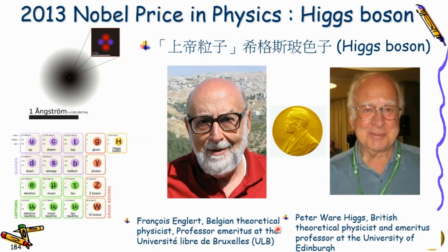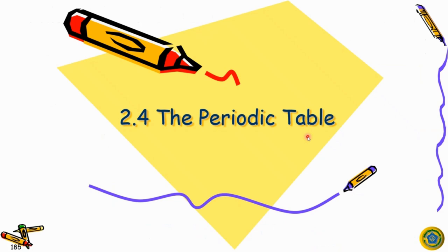I think we've finished the first topic on electrons. We don't discuss particles inside the nucleus — for example, the Higgs boson, for which the 2013 Nobel Prize in Physics was awarded — that's out of scope. We only discuss electrons. Next week we will talk about the periodic table, moving from the small scale — from atoms to molecules to crystals. That's it for today. I hope you enjoyed the lecture, and I'll see you next week. Have a nice weekend.